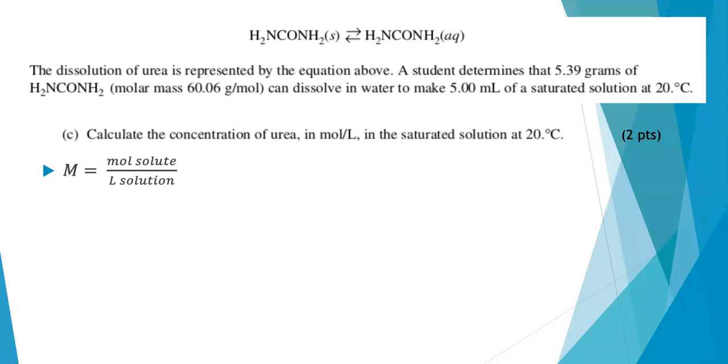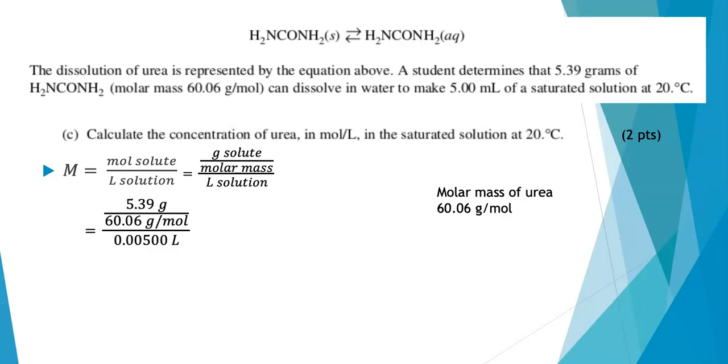Part C asks us to find the molarity of this saturated solution at this temperature. So this question was scored out of two points, and the place to start is really the molarity formula: moles of solute over the volume of the solution in liters. I like to substitute in the grams per mole definition into my equation. So I know the mass of the solute, I know the molar mass that was given to me, I know the volume of the solution in milliliters. We need to make sure that we put it into liters when we do our math. We were given the molar mass of urea, so we didn't even have to find that. I do have to make sure that I convert my volume to liters, or my answer will be off by three orders of magnitude, which is always kind of awkward.